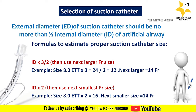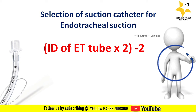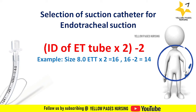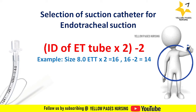Formula 3: internal diameter of the ET tube multiplied by 2, then minus 2. For example, ET tube internal diameter is 8: 8 × 2 = 16, minus 2 = 14, which is the appropriate suction catheter size. All three formulas give the same answer of 14 French, and you can use whichever formula is most comfortable for you.